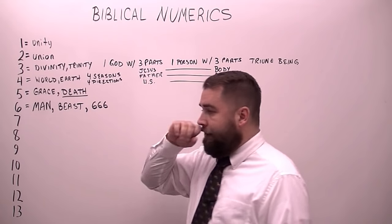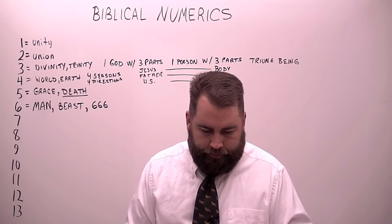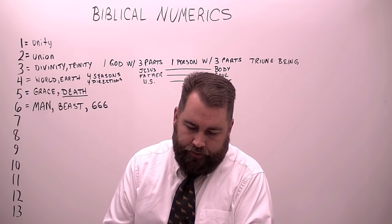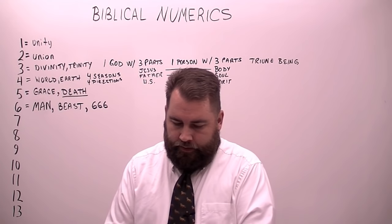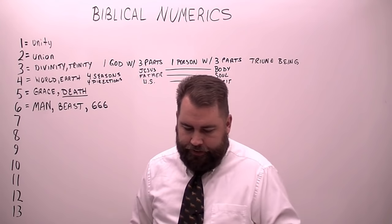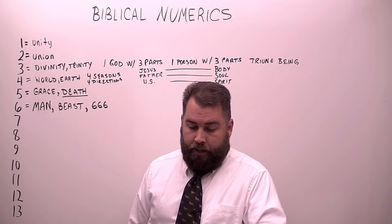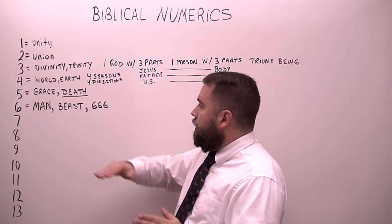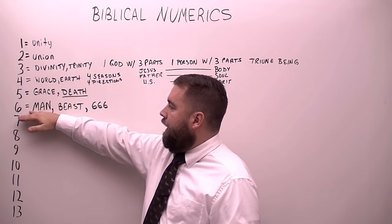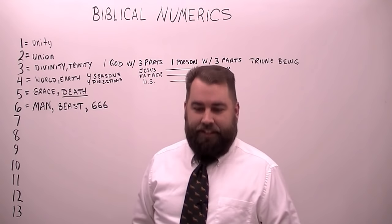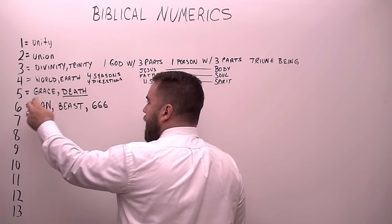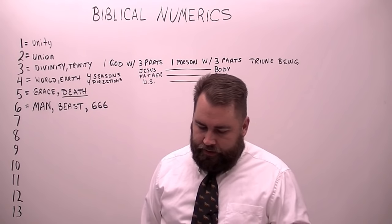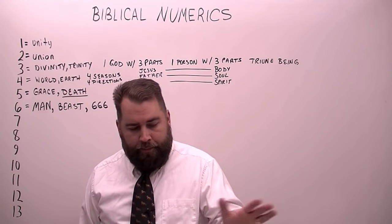Now go to First Timothy 5:6, which talks about someone who is dead while she lives. First Timothy 5:6 says, 'But she that liveth in pleasure is dead while she liveth.' Who is it talking about? A widow — a woman who was part of a man. When a man and a woman get married, they become one flesh. So it's interesting: chapter five, verse six — five is death, six is man. She's dead while she lives, a dead woman — wo-man. You find some interesting things, how Bible verses just happen to correspond with what they're talking about.